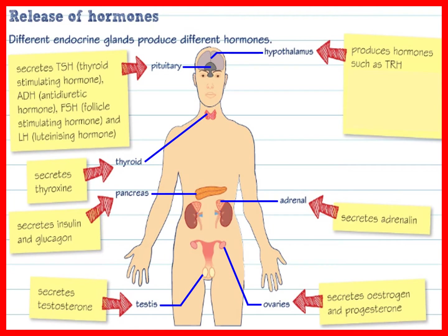Other hormones include TRH, TSH, FSH, LH, and ADH. All the places where hormones are produced are called endocrine glands, such as the hypothalamus, pituitary gland, thyroid gland, pancreas, adrenal gland, testes, and ovaries. The hormones are then secreted and travel through the bloodstream to target organs where they have an effect.